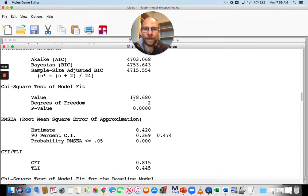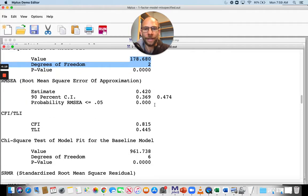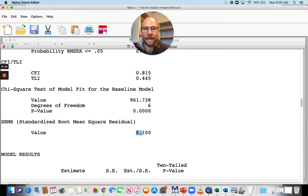We can see from the chi-square that this is a horrible fit. The model has only two degrees of freedom. We have a chi-square of almost 180. We also get a really bad RMSEA, CFI, TLI, and a very high SRMR as well. What happened here? Why does this model not fit?